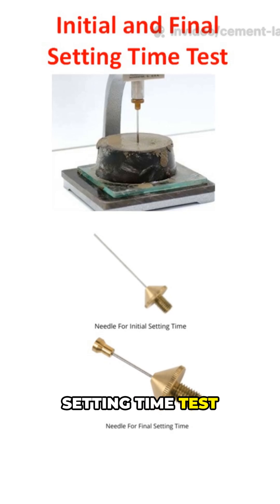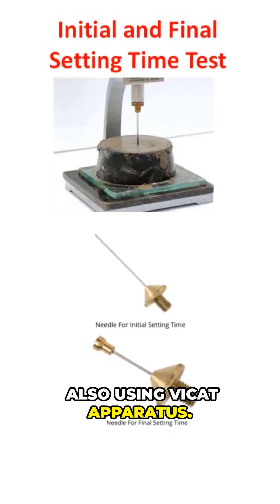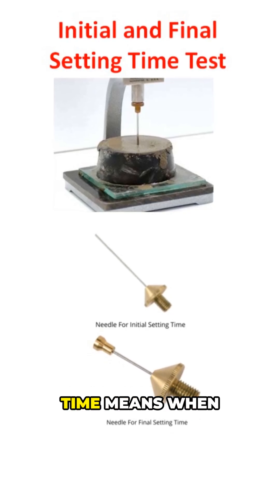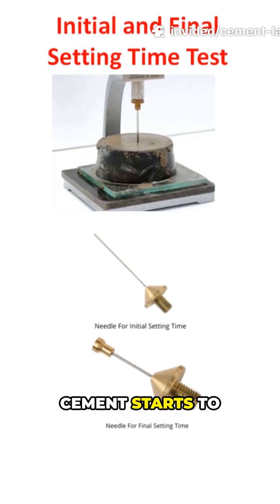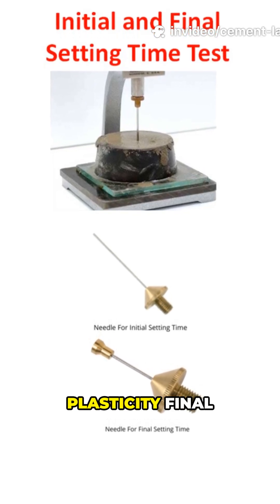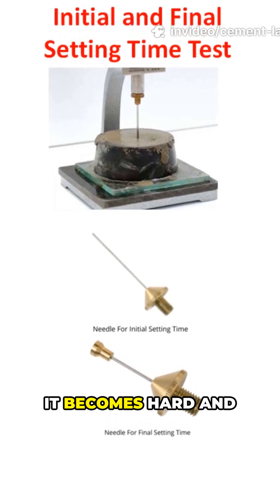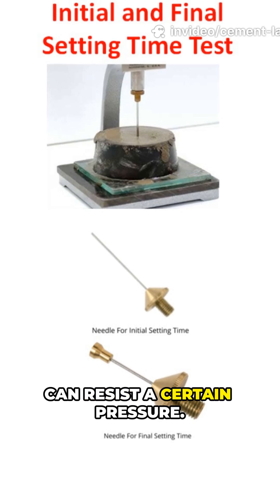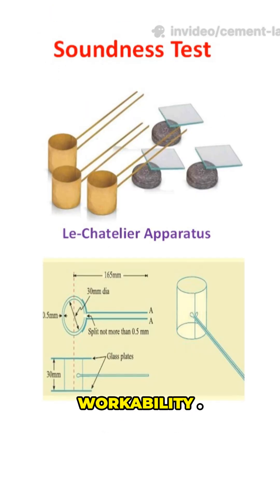Setting time test, also using the Vicat apparatus. Initial setting time means when cement starts to stiffen and loses plasticity. Final setting time is when it becomes hard and can resist a certain pressure. This is important for workability.